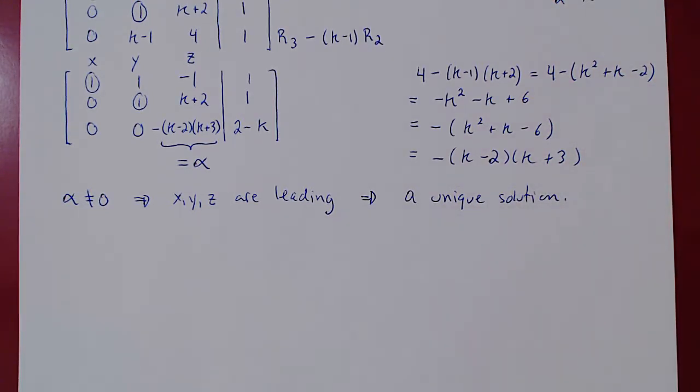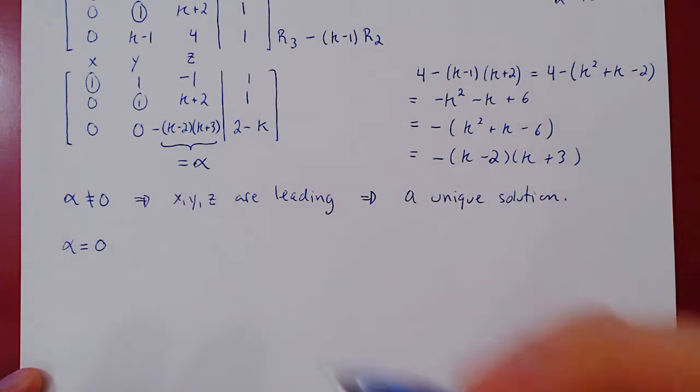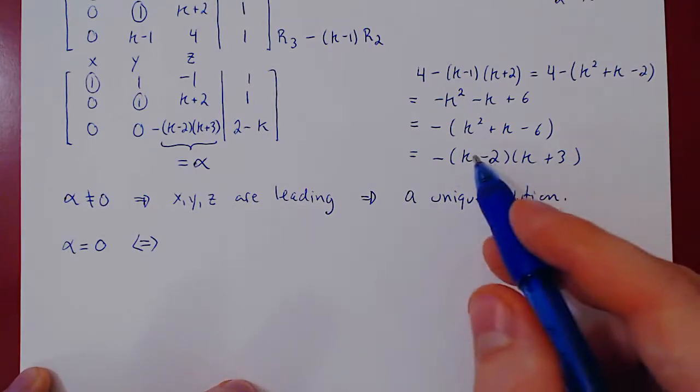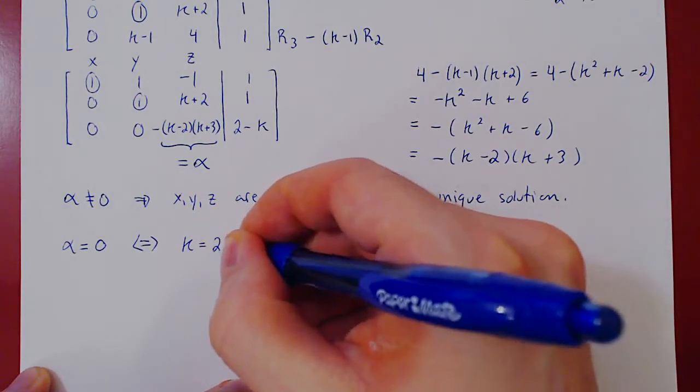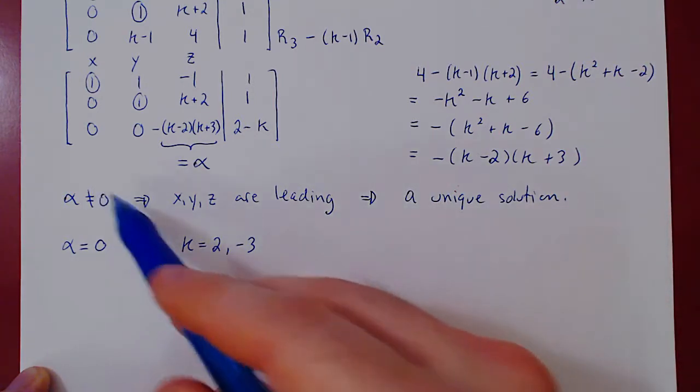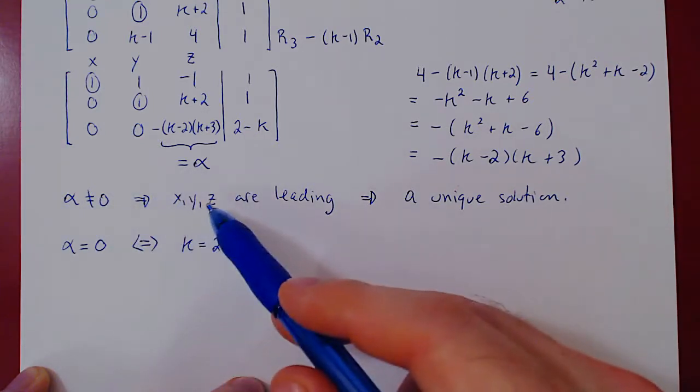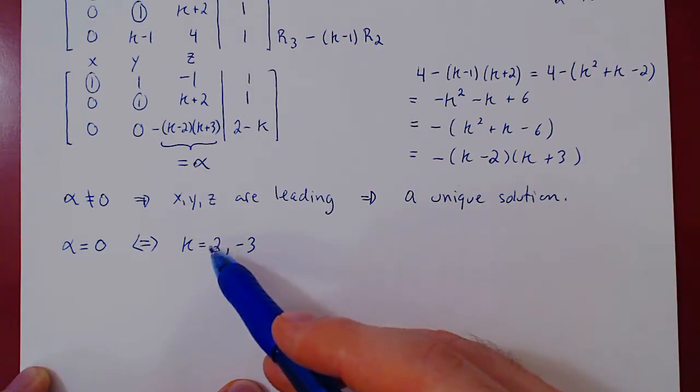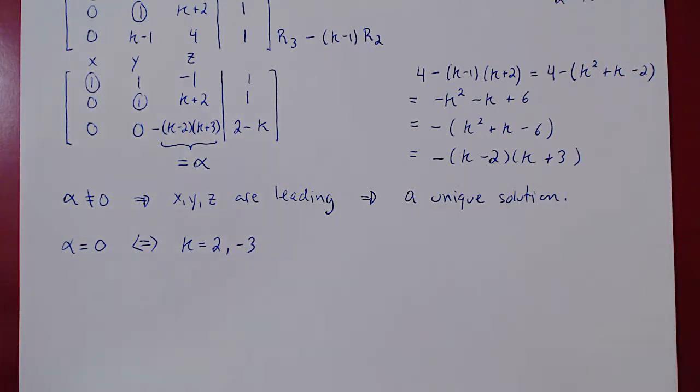So the only question left over, of course, is the second case. What if alpha is zero? Well, alpha is zero if and only if, it is factored right here, if k equals two, or k equals negative three. And so you see what we have is actually quite simple. For any value of k, other than two and negative three, alpha is non-zero. All the variables are leading, and we have a unique solution. Then we have two special cases, when k is two, and when k is negative three. Those are our last two special cases, and we have to check them one at a time.